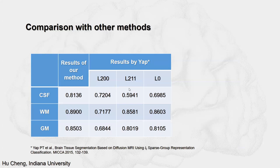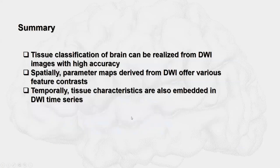A comparison with other similar methods using examples of white matter, gray matter, and CSF shows that our method performs better. Our dice score is higher than Yap's work.